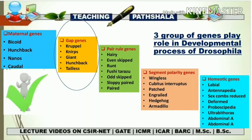From our previous video, we have understood the different types of maternal genes. There are more than four, but the main maternal genes are bicoid, hunchback, nanos, and caudal, and we have also seen many more maternal genes. Now let's see what the gap genes are. Gap genes have a total of 5 categories.